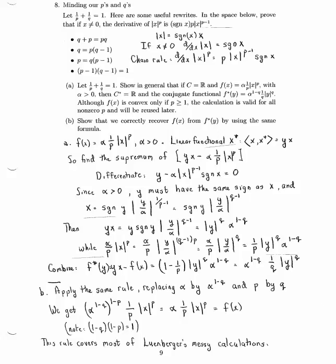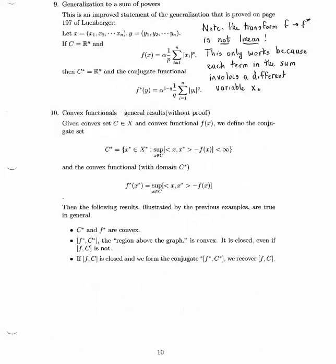We'll be able to use this rule again and again in doing applications of Fenchel duality. Let's extend it a little bit further. This result is proved on page 197 of Luenberger. And notice here x is a vector with components called x1, x2, on up through xn. y has components y1 through yn.